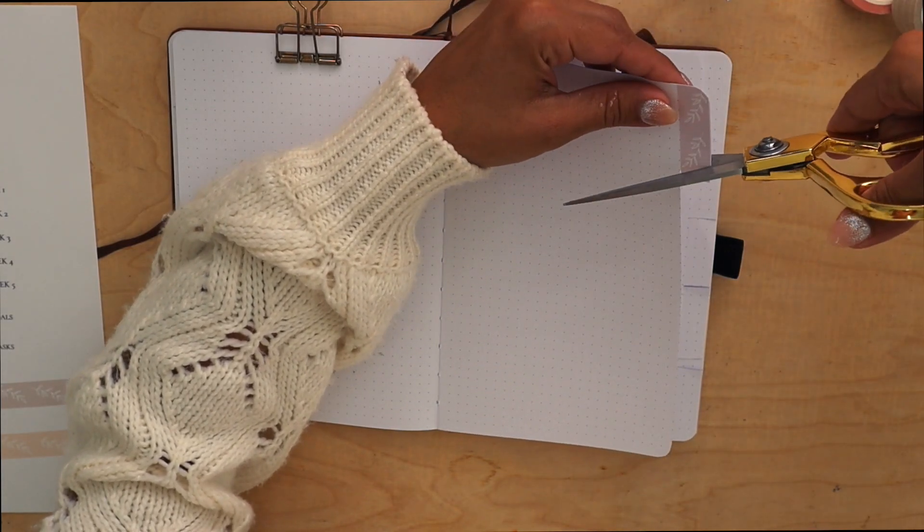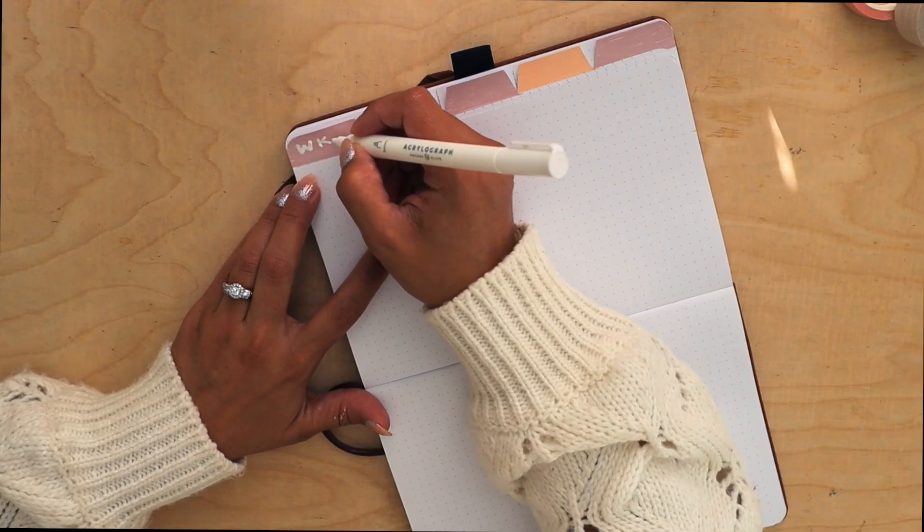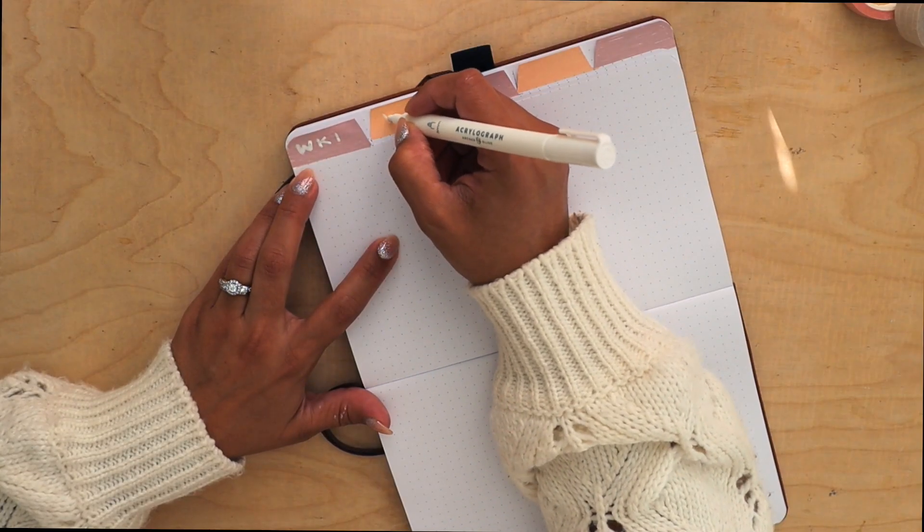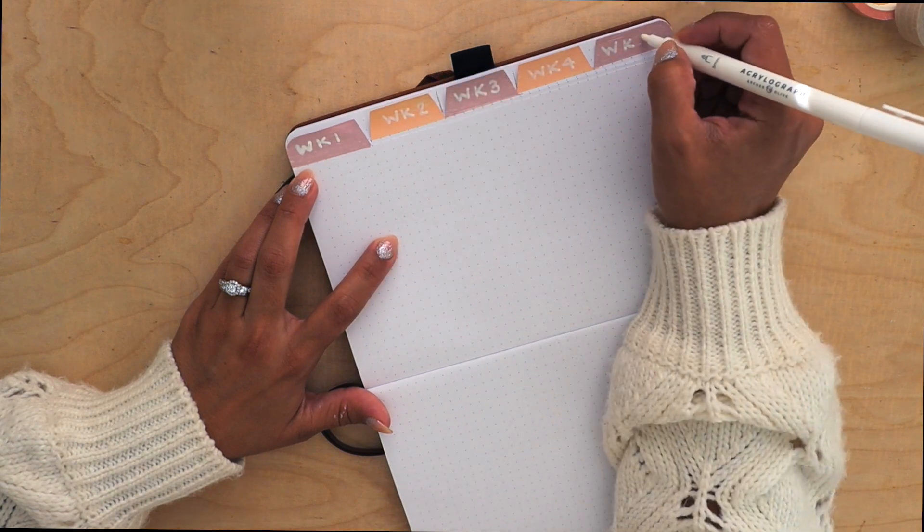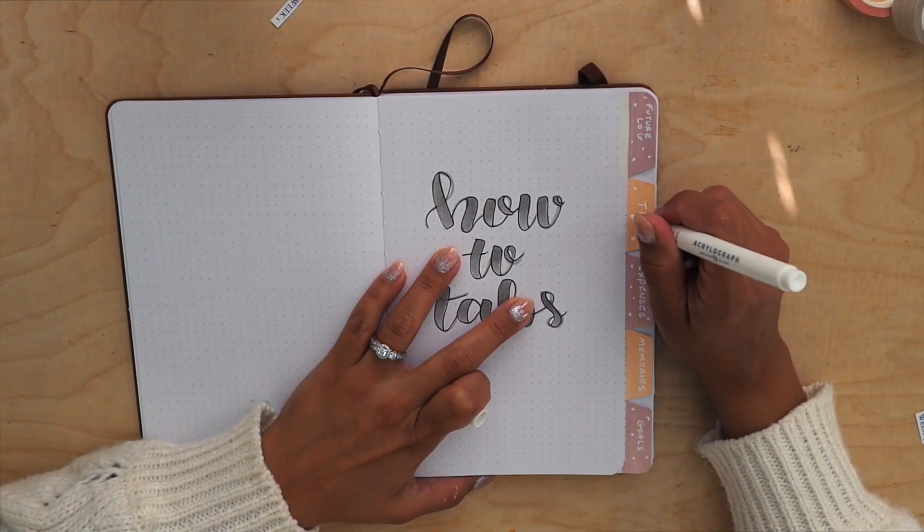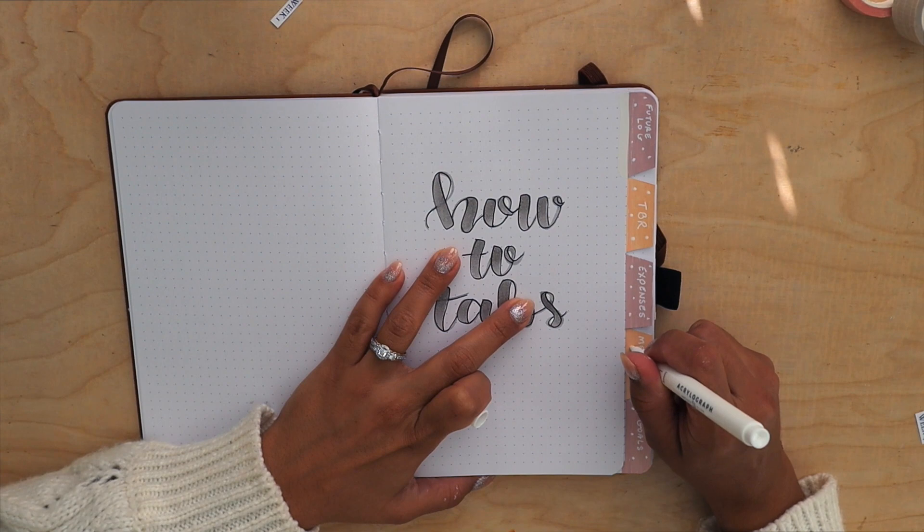Lastly, it's time to label them. I like using tabs to categorize my weekly spreads and my initial budget setup, so I'll label the spreads that I'm constantly referring back to like my future log, finance, and my TBR.